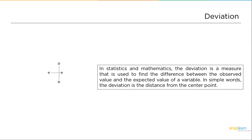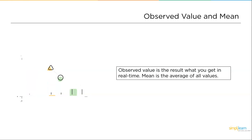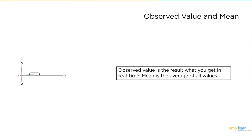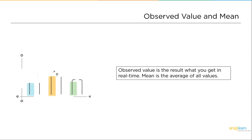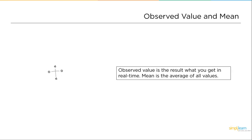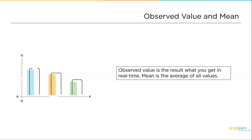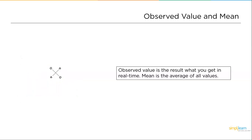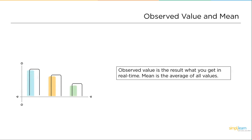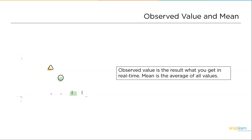The observed value is the value that you get in real time, unlike the predicted value. To calculate standard deviation in Excel, you need variance, deviation, and mean. All these parameters are supposed to be calculated first and then you will apply the final formula to calculate standard deviation.